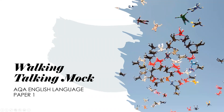Hello and welcome to the first part of a walking talking mock lesson focusing on AQA English Language Paper One, Section A and Section B — the whole paper. The first part I'm going to be talking through the questions, approaches to the questions, timings, some general tips and advice, and a couple of tips and tricks. In the second part, I'll be going through each question with some model examples and some pitfalls you may have fallen into when attempting the exam paper.